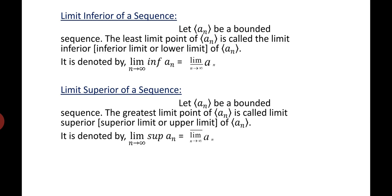The next definition is limit superior of a sequence. Let a_n be a bounded sequence. The greatest limit point of a_n is called the limit superior, or superior limit, or upper limit of a_n. It is denoted by lim_{n→∞} sup(a_n), which is equal to lim_{n→∞} a_n.